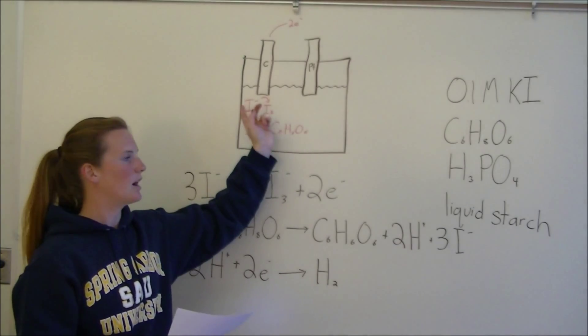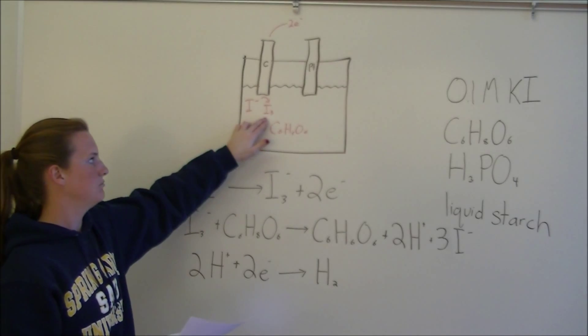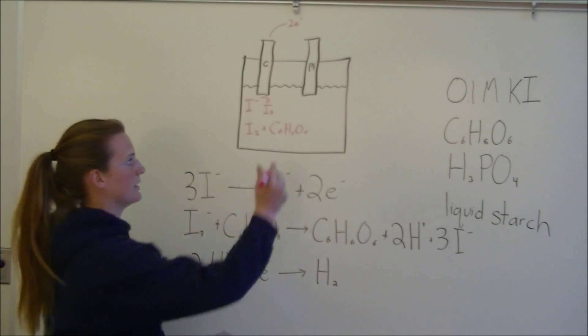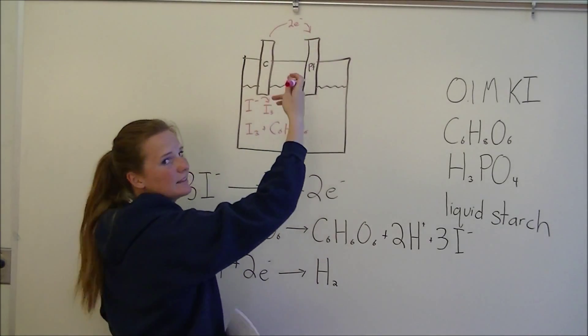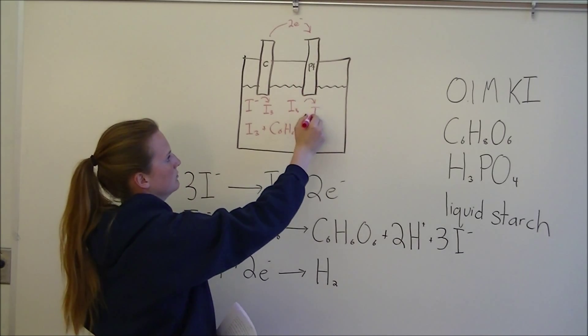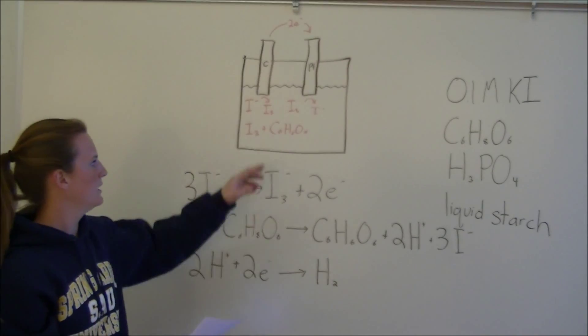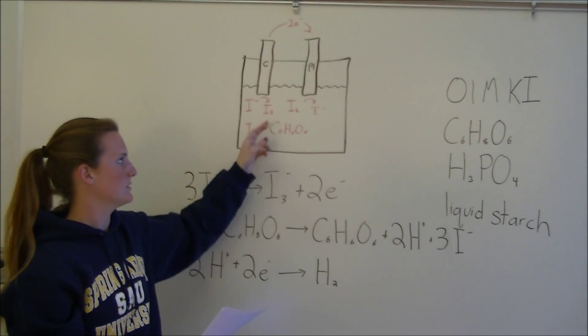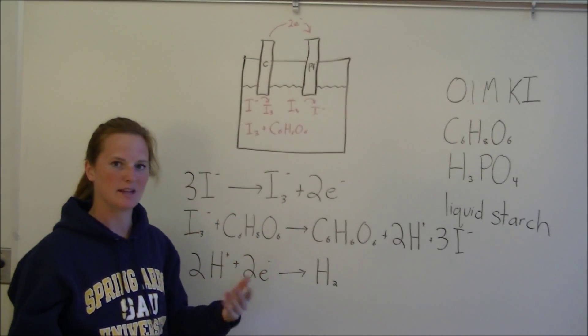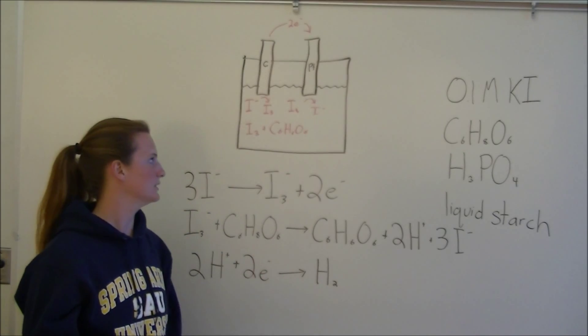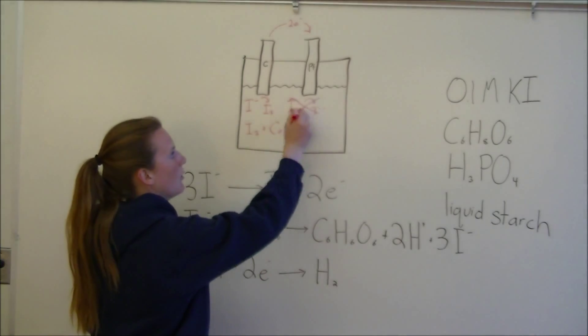However, since both electrodes are in the same cell, a problem that could arise is that this iodine could just be reduced right back to iodide. The iodine could take those two electrons and back to iodide we go. This is a problem because then not all the iodine is going to interact with the ascorbic acid.